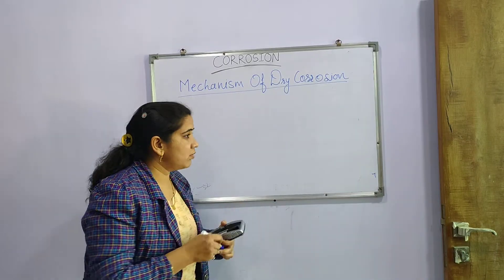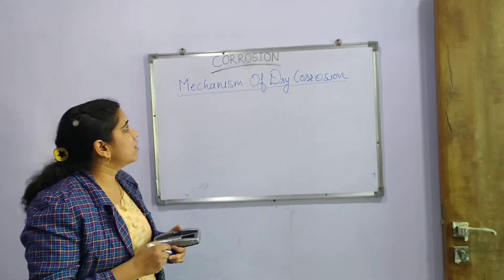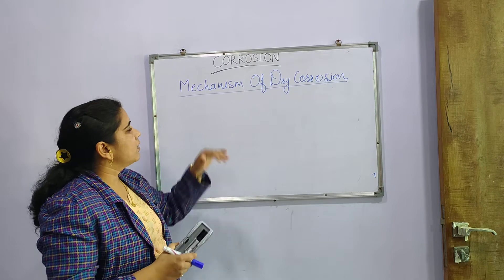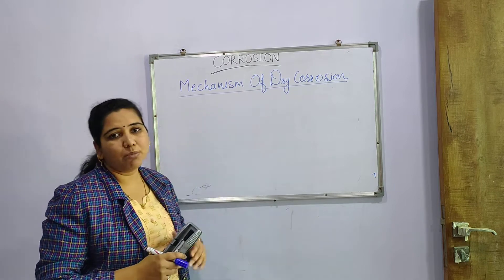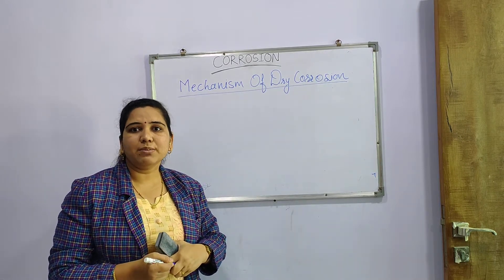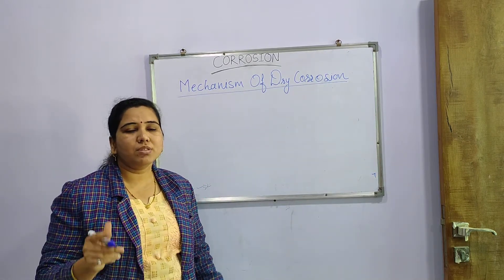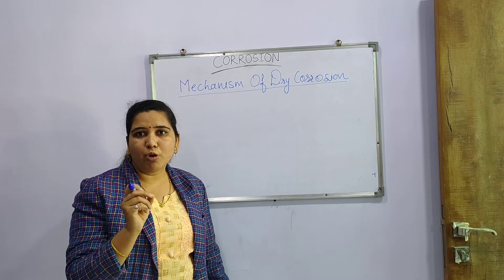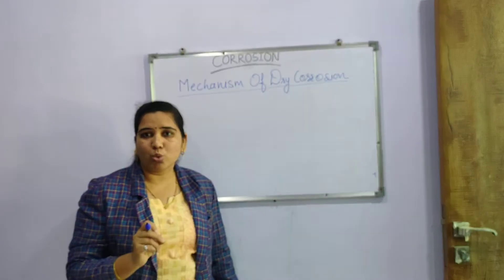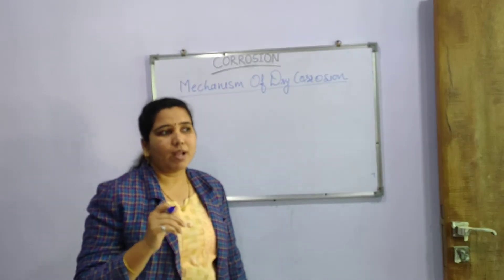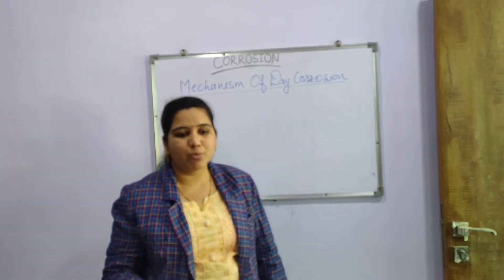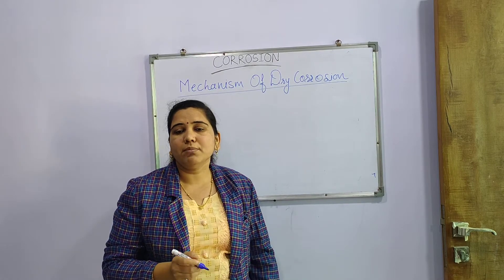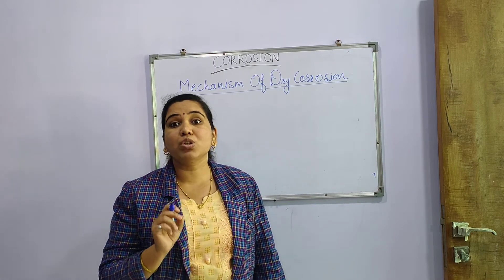So now we will move ahead to the Mechanism of Dry Corrosion. In this mechanism, first we will see corrosion and then how the process is carried out. Corrosion is nothing but the process of oxidation.